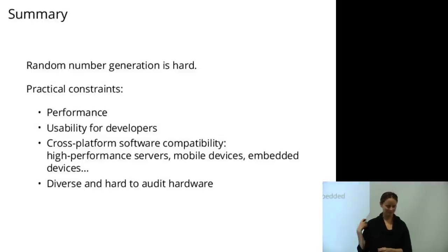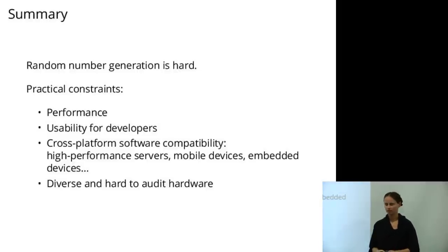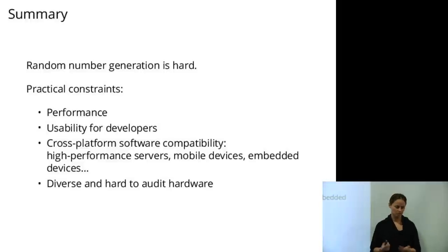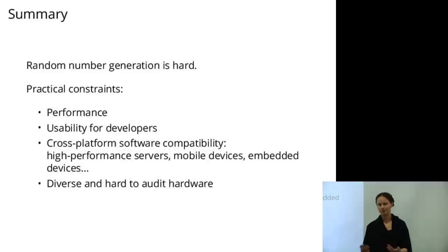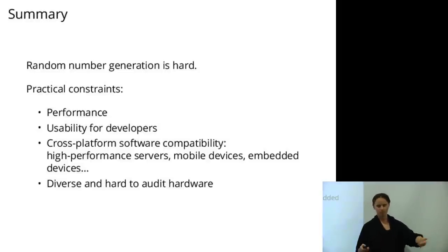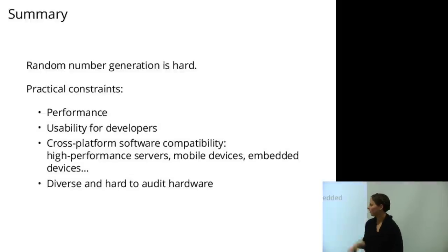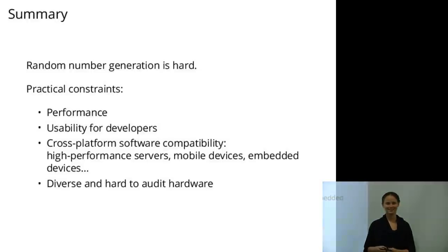In summary, random number generation is hard. It's a very hard problem in practice, and people screw it up all the time. There are a bunch of practical constraints that come up for developers and deployed systems that aren't part of the standard cryptographic model: performance, usability for developers, cross-platform software compatibility across high-performance servers, mobile devices, and embedded devices, and the fact that hardware can be very diverse and hard to rely on. That's all for today.